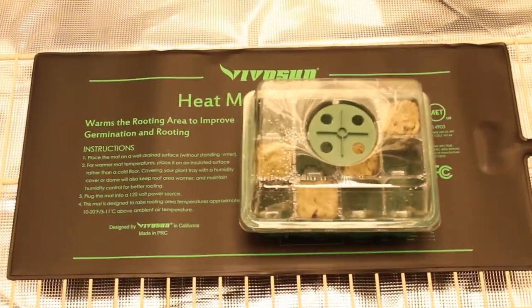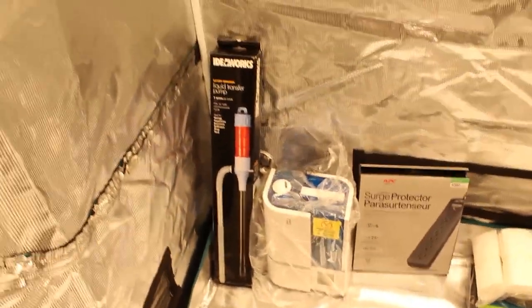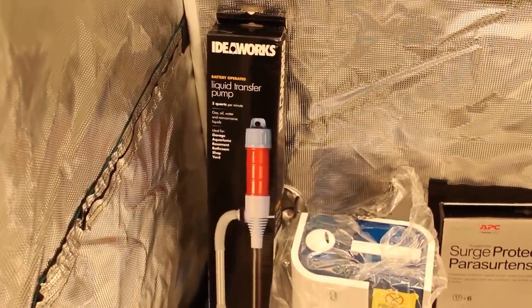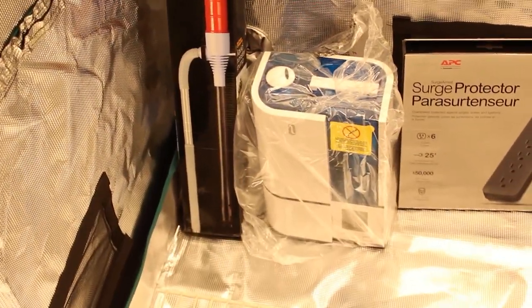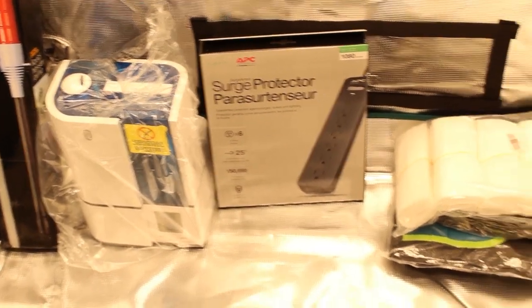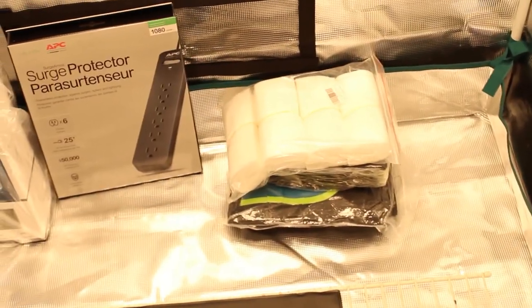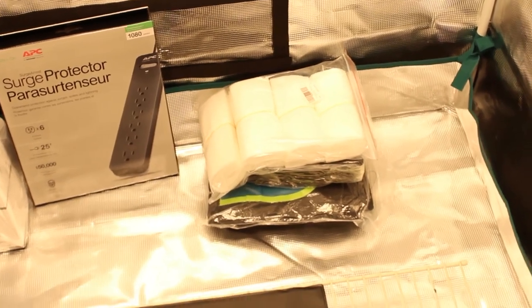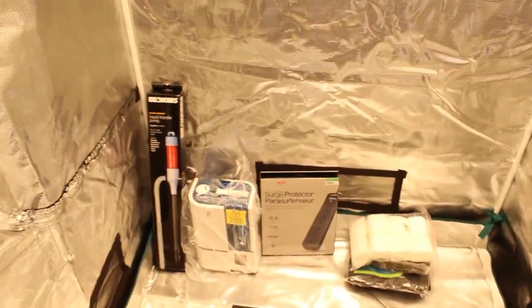In this corner we just have a couple of the miscellaneous items like a liquid transfer pump, our humidifier, surge protector, and then the one gallon bags as well as five gallon bags.